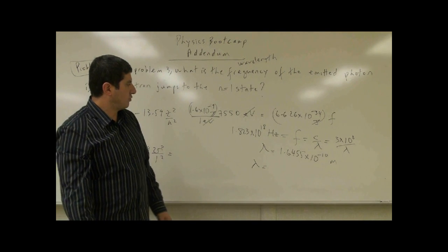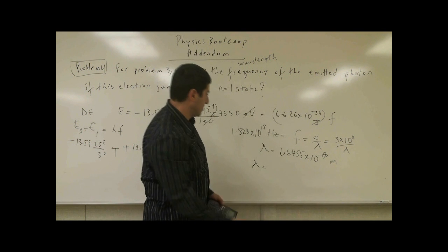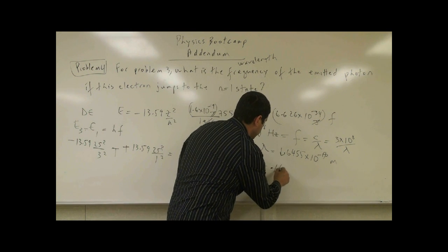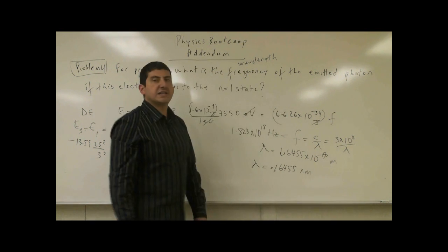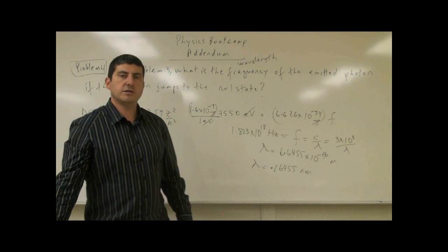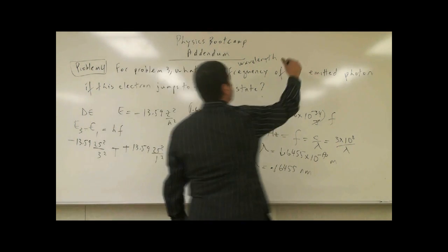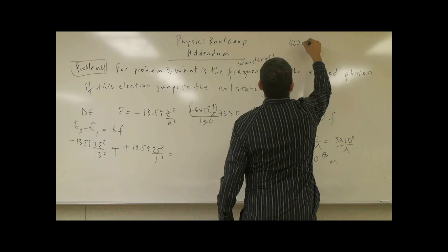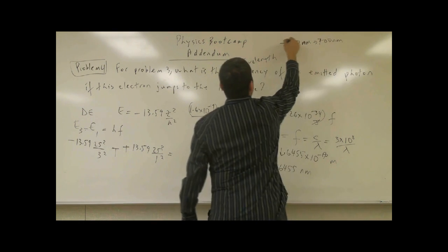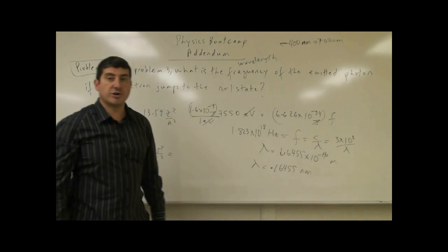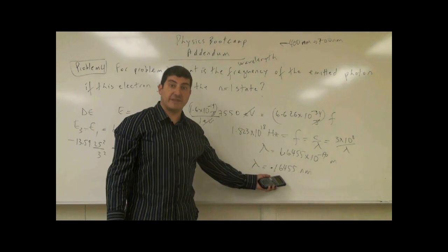That converts to 0.16455 nanometers. Is that visible? No — the visible spectrum goes from 400 to 700 nanometers. Anything shorter than 400 nanometers is ultraviolet, so this will show up as ultraviolet light and we will not be able to see it visibly.